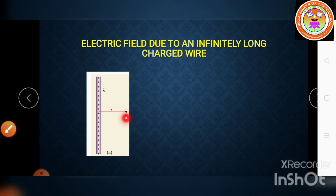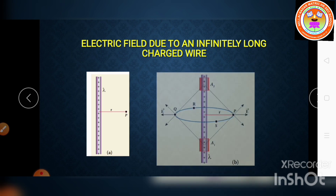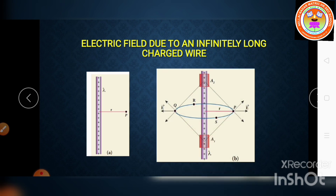I am going to consider one point P at a perpendicular distance R from the wire. I want to calculate the electric field at point P using Gauss's Law. For that, let us consider areas A1 and A2 on the wire which are at equal distance from the point P.